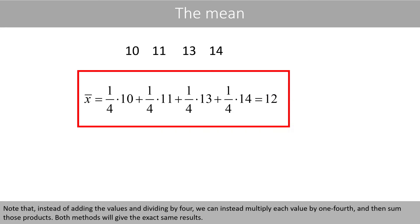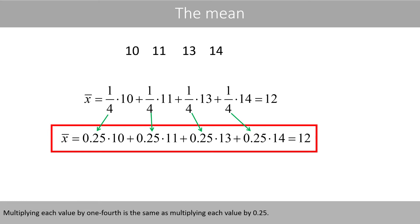Note that instead of adding the values and dividing by 4, we can instead multiply each value by 1/4 and then sum those products. Both methods will give the exact same results. Multiplying each value by 1/4 is the same as multiplying each value by 0.25.